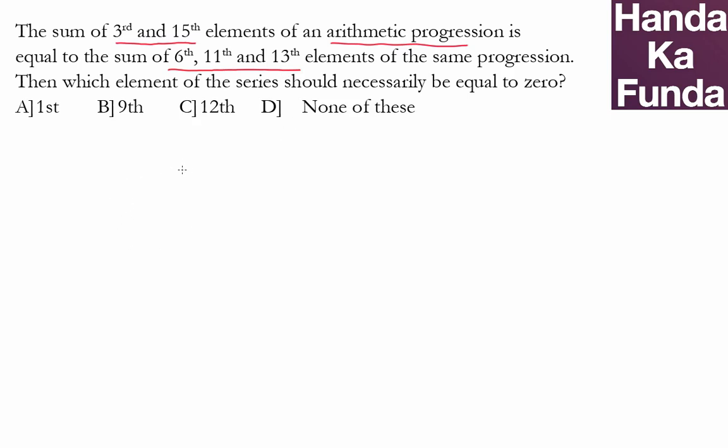So what will be the 3rd and the 15th elements? Third element will be A plus 2D whereas the 15th element will be A plus 14D and we are given that their sum is the same as the sum of the 6th element which is A plus 5D, 11th will be A plus 10D and the 13th one will be A plus 12D.